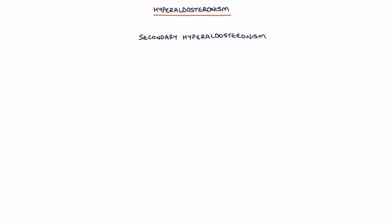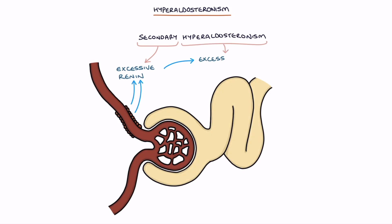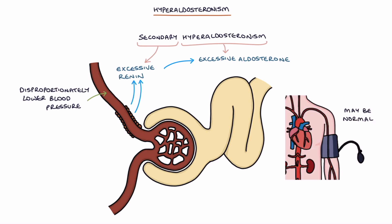Secondary hyperaldosteronism is caused by excessive renin stimulating the release of excessive aldosterone. Excessive renin is released due to disproportionately lower blood pressure in the kidneys. The blood pressure in the limbs may be normal or high, but the blood pressure that reaches the juxtaglomerular cells inside the kidneys is low.